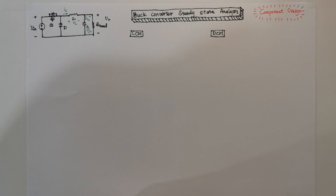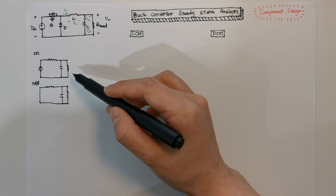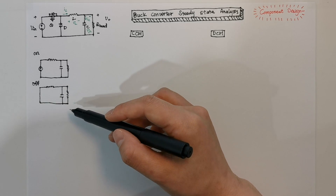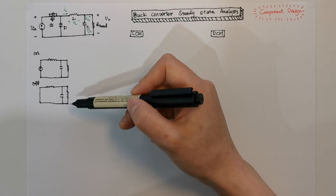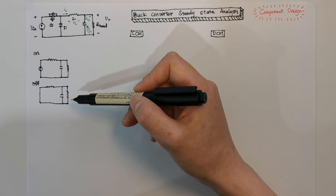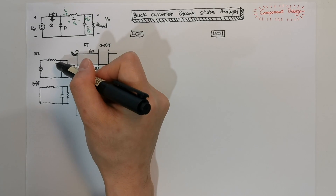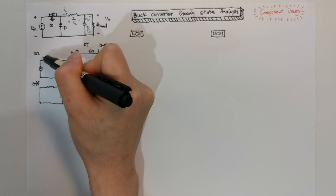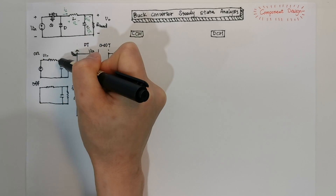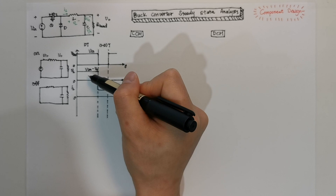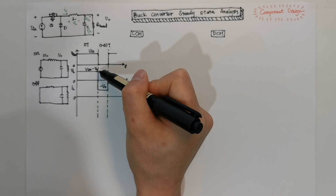For any type of converter analysis, we first separate the on and off states of the switch. This is when the switch is on and this is when the switch is off. After we plot these two, we can plot the waveform of the inductor voltage. We can see that when the switch is on, this point is V_in and this point is V_out, so the voltage across the inductor is V_in minus V_out.